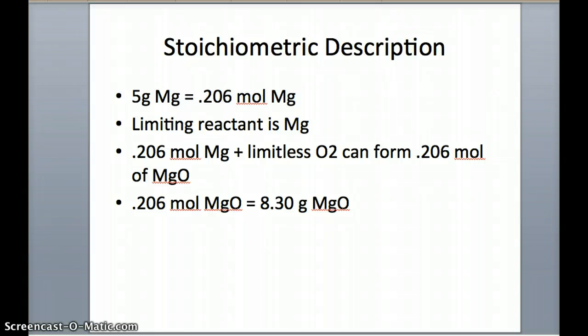Because there's 0.206 moles of magnesium oxide, when we multiply this number by the molar mass, we will get a mass that is greater than the mass that we originally started out with, which will describe why there was an increase in the amount.